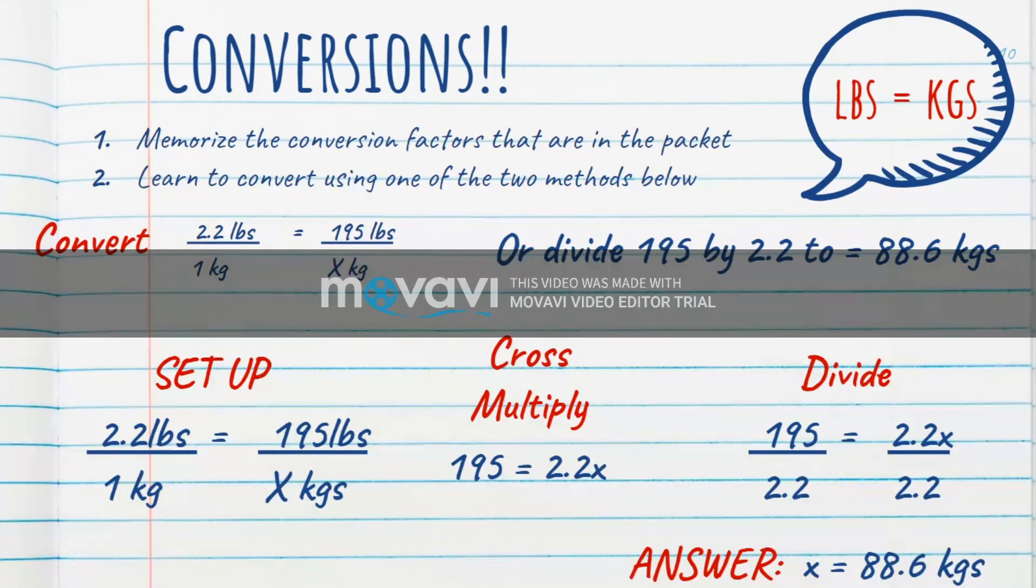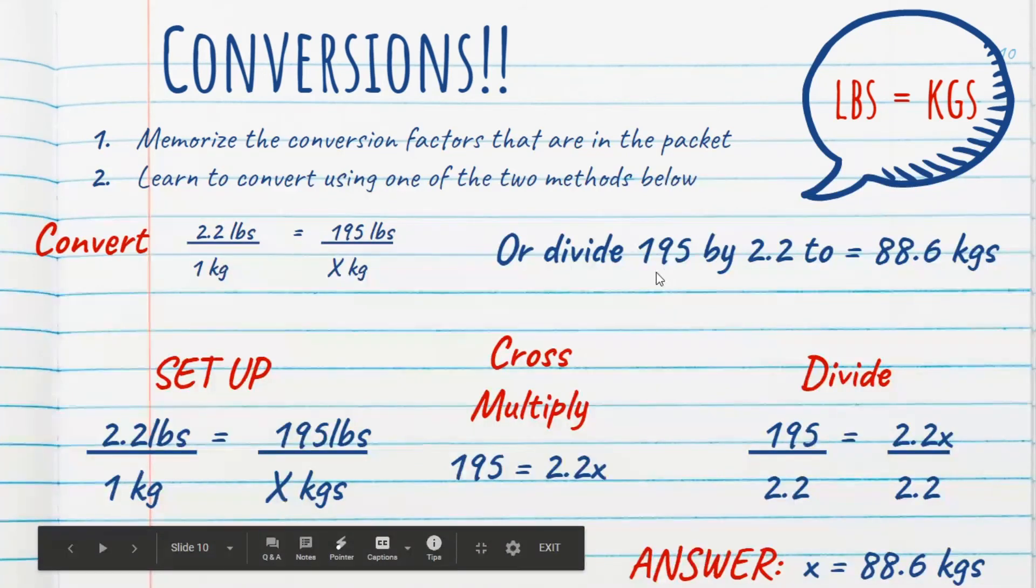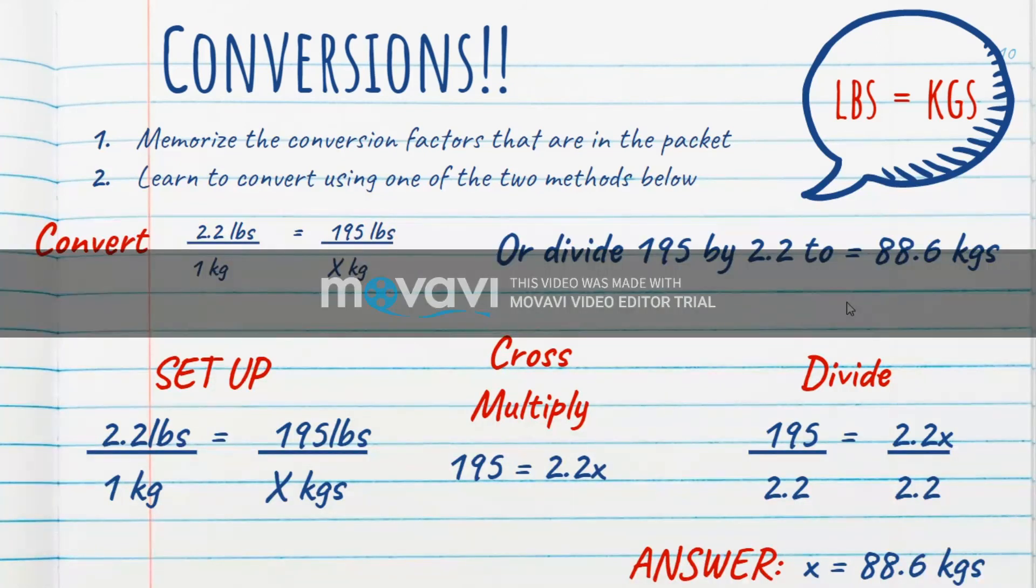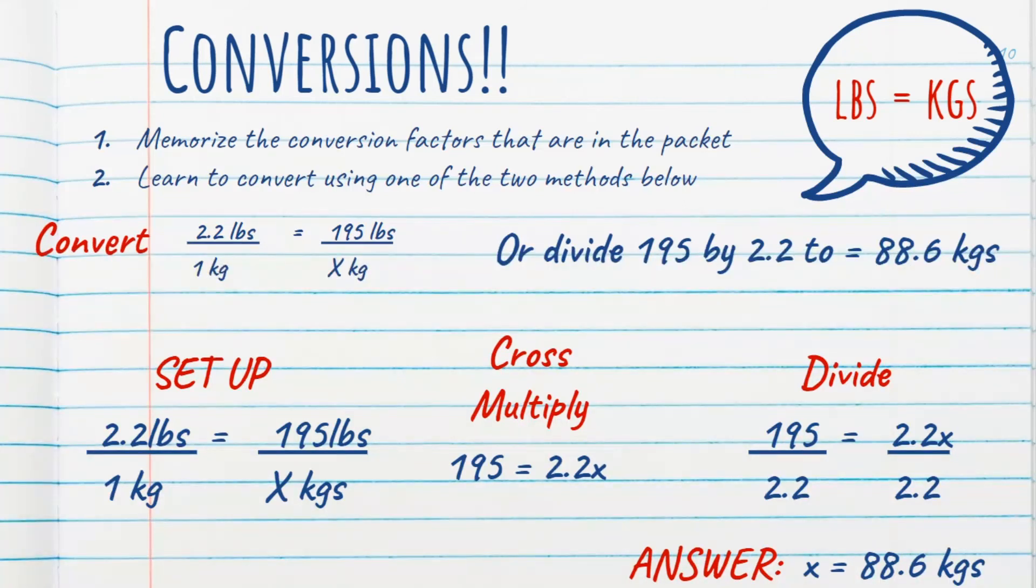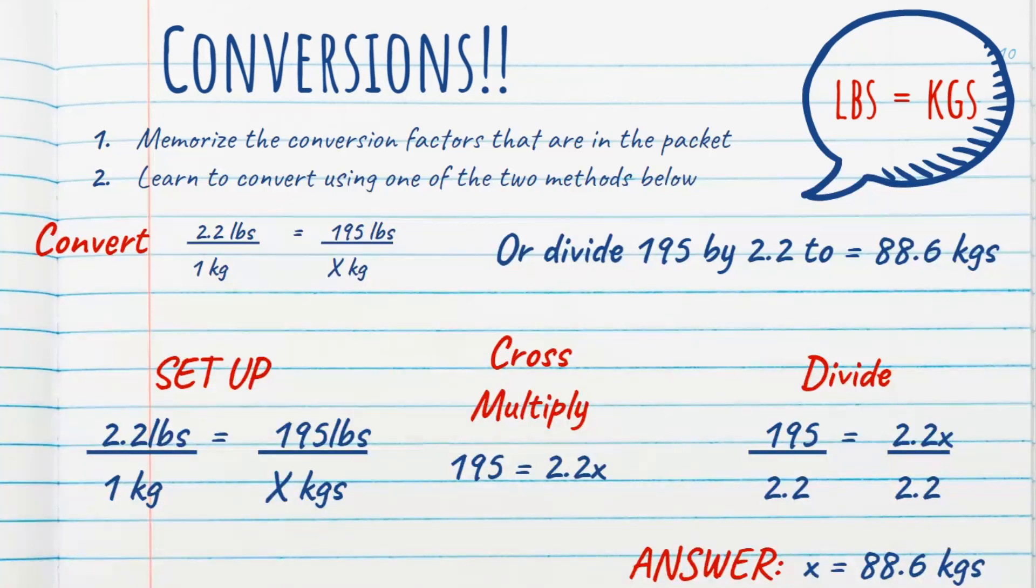So you've memorized your conversion factor, and we're going to start using that. If you understand math really, really well, and you know that all you need to do is divide 195 by 2.2 to get the answer, you're welcome to do that. But if you cannot do that every time and understand it, please set up the problem in a ratio and proportion until you have that mastered. Sometimes I even forget, do I need to multiply here or divide it? And ratio and proportion keeps you from forgetting how to do it and making a very simple mistake when you could have just set up a problem and got it done. So we set it up by saying 2.2 pounds over 1 kilogram equals 195 pounds over X kilograms. That's what we're solving for.